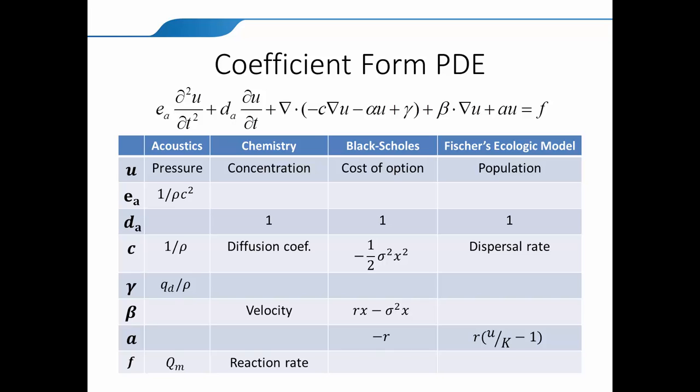Or if you are doing a population modeling, like say the Fisher ecological model, then U would be your population size. You don't have Ea. Da is 1. C is basically the migration rate. And then A can be, basically it's formed out of the birth rate, or the net birth rate, and then the carrying capacity. So R times U over K, the carrying capacity, minus 1.